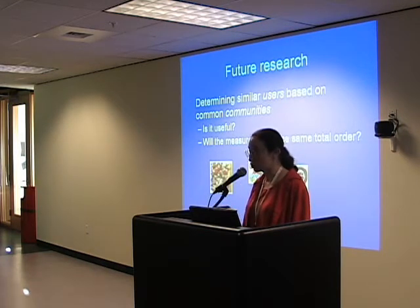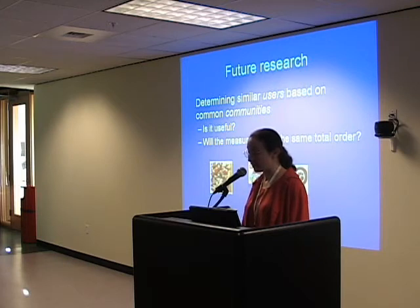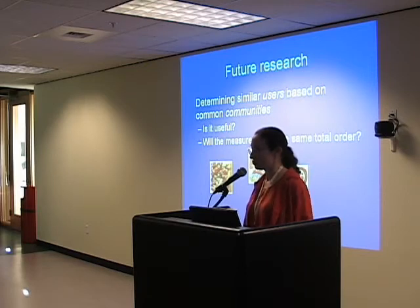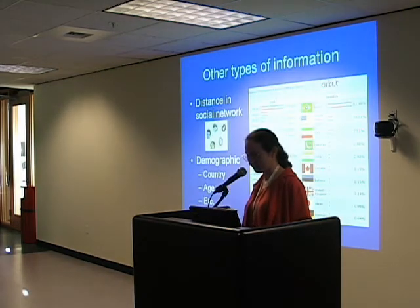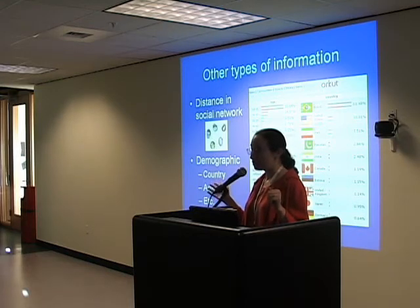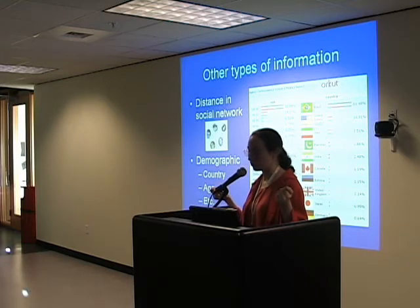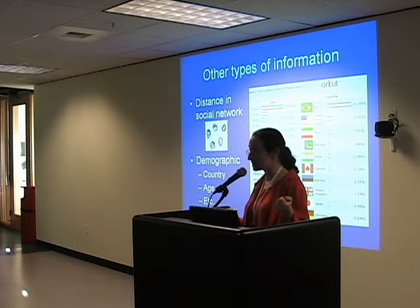There are many possible future research areas. One idea is to flip things around: instead of determining similar communities based on common users, figure out similar users based on common communities. For example, there were nine users who belonged to the same three communities I belonged to — it could tell me 'you might want to meet these people.' We could also incorporate demographic information, distances in the social network, or weight recommendations by country since Brazil was the most popular country and you'd often get recommendations in languages you might not speak.